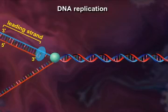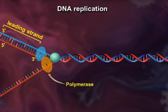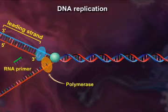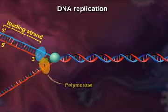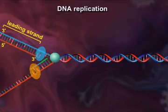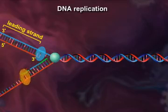The synthesis of the complementary strand is more complex. The polymerase on this strand initiates DNA synthesis at the replication fork from an RNA primer made by a primase complex. The polymerase then elongates the strand in the direction opposite to that of the fork.